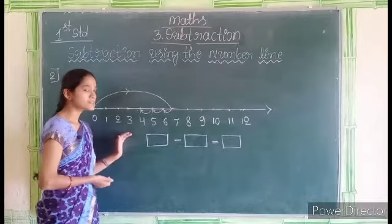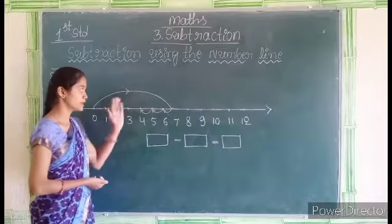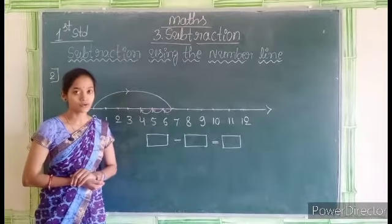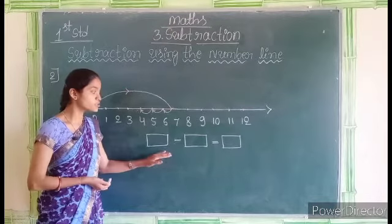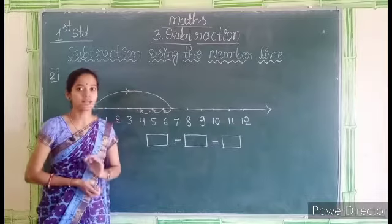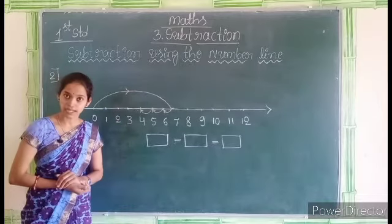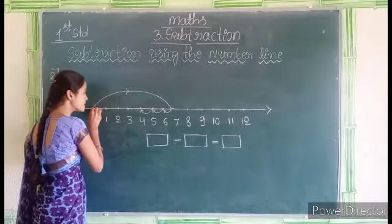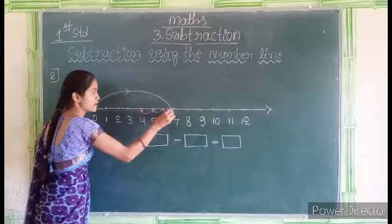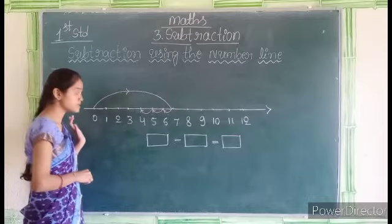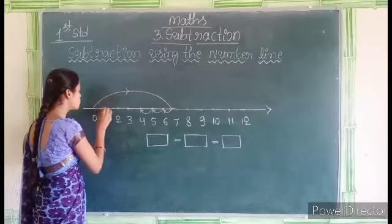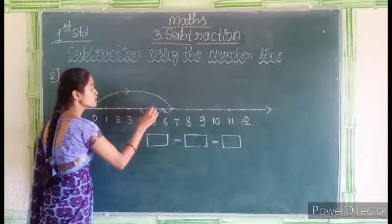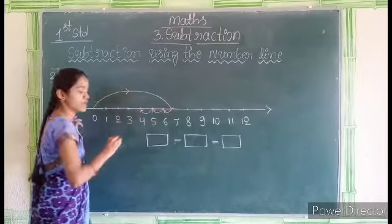Students, in this number line they have already drawn the lines. Now we have to find out which numbers are used in the subtraction. Let us find out. Here the line reaches from 0 to 7. So let's count: 0, 1, 2, 3, 4, 5, 6, 7.